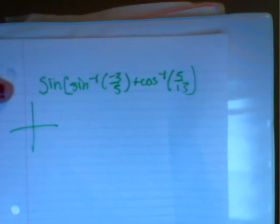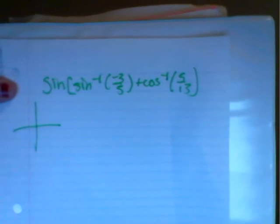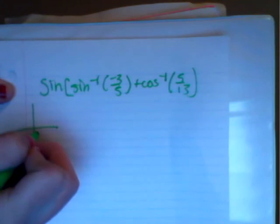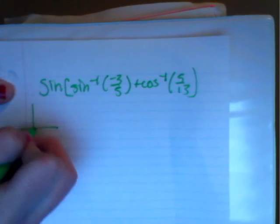So to find the remaining things, we're going to make a triangle. And this one's going to be in the fourth quadrant.